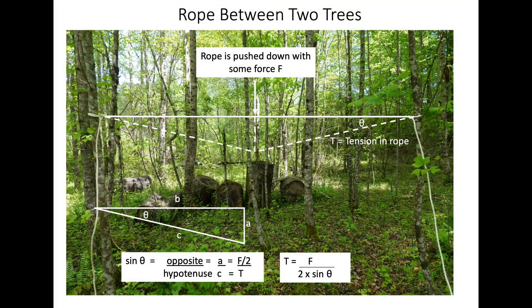This is a diagram of our rope between two trees we had out there in the woods. And if we push down on the rope with some force, the rope deflects, comes down to some point here and creates an angle between the horizontal and where its position is here. We're going to assume this is static and not moving.